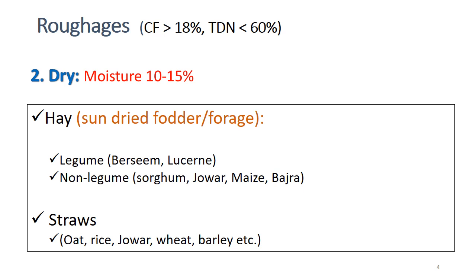Straw by definition is the outer covering of the seed available to the farmer for animal feeding after separation of the grain from the rest of the plant. In Pakistan, oat, rice, sorghum, wheat, and barley are commonly grown for grain; during the threshing process the straw is separated — and in the case of rice, during shelling. These straws are commonly used in animal feeding, and wheat straw is the most commonly available feedstuff in the country.